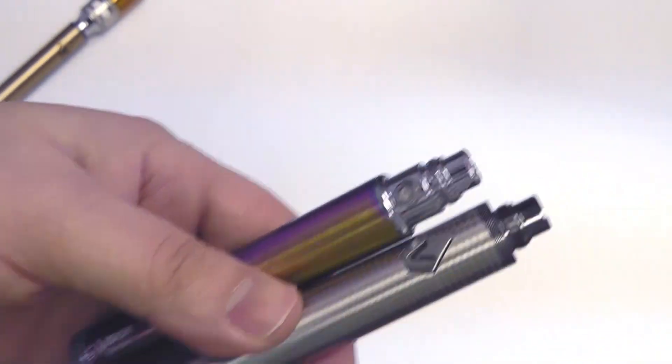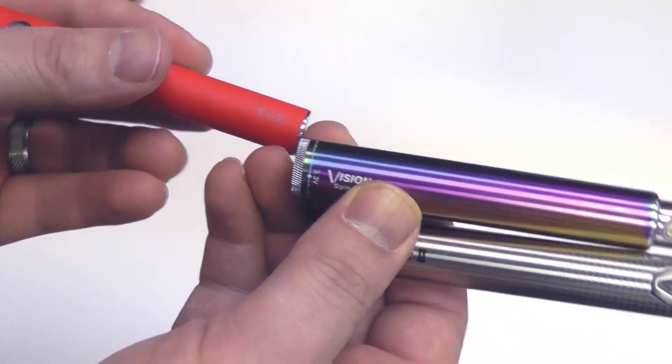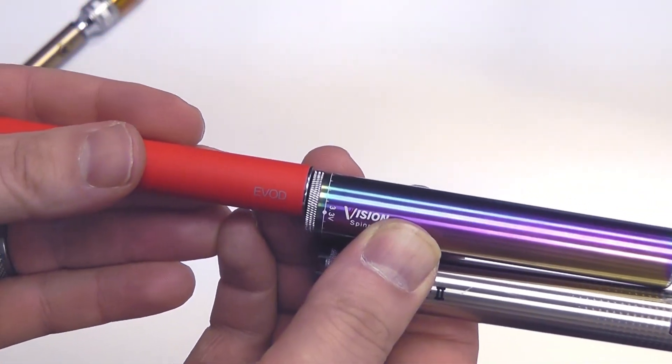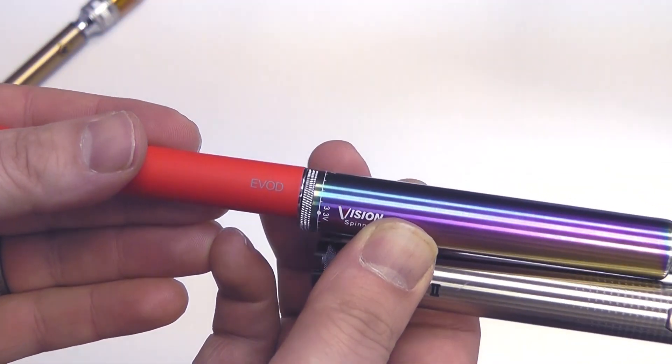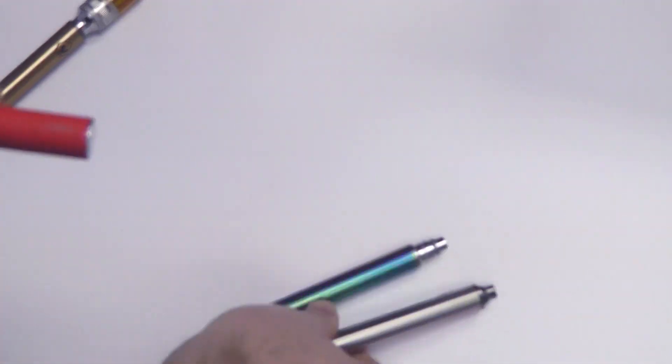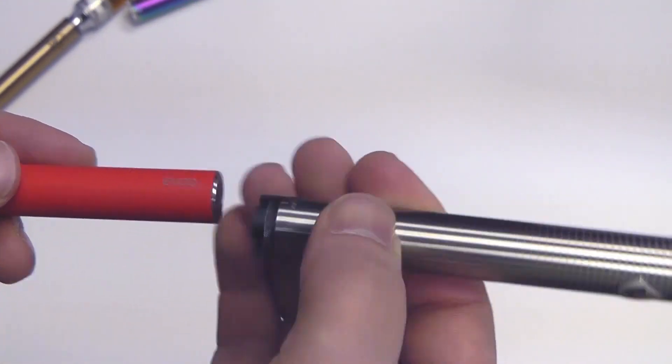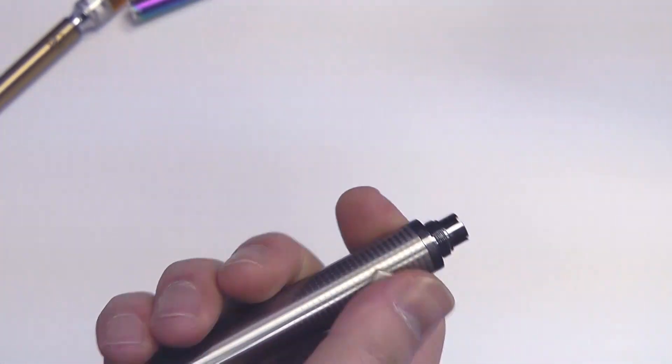It has a nice feel to it. It's quite a bit bigger than your standard eGo or EVOD style batteries in terms of diameter, but it has a good feel to it. It's not overly huge, it doesn't feel like a baton or anything like that. It's a good size, I like it a lot.